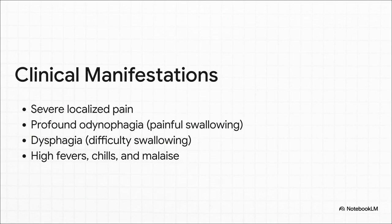So what are the red flags you should be looking for? The patient is almost certainly going to come in with severe localized pain. But the real telltale signs, given the anatomy we just talked about, are profound odynophagia and dysphagia — that's incredibly painful and difficult swallowing. This points to something much bigger, much deeper. You couple that with systemic signs — high fevers, chills, general malaise — and the picture of a serious deep neck infection starts to become alarmingly clear.